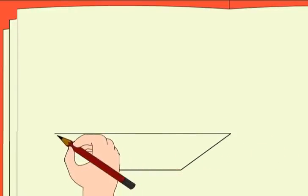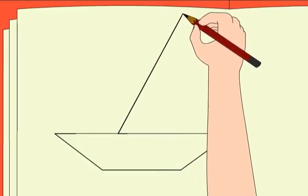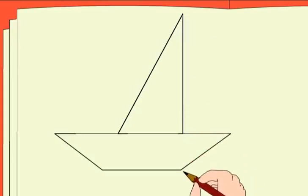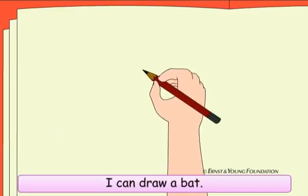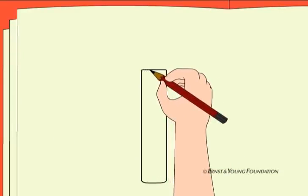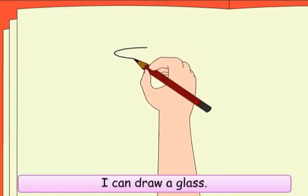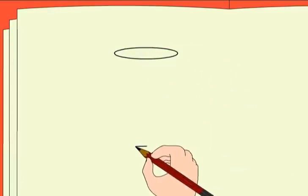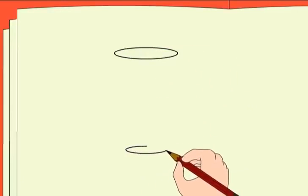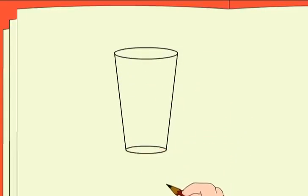Meenu continues drawing and names her creations: 'I can draw a boot. I can draw a bat. I can draw a glass.'